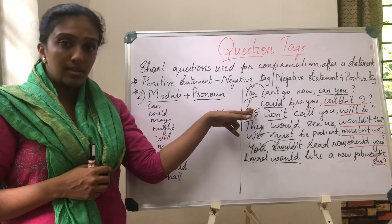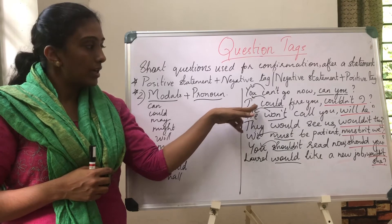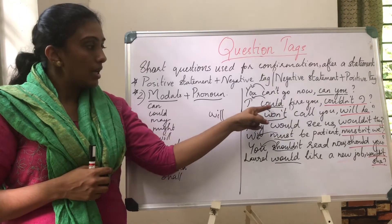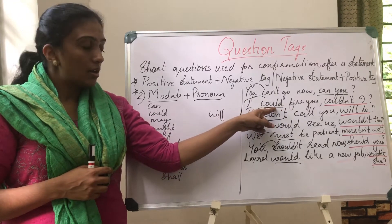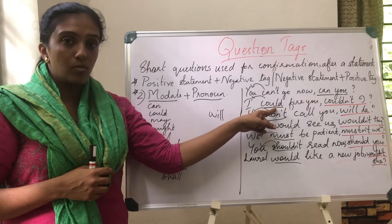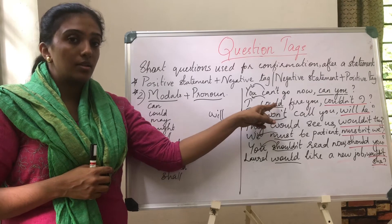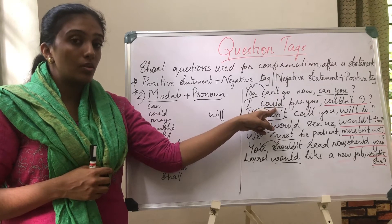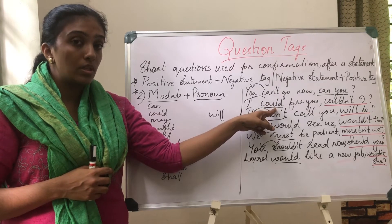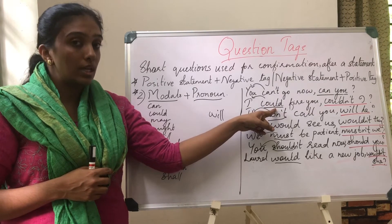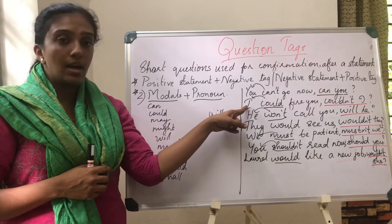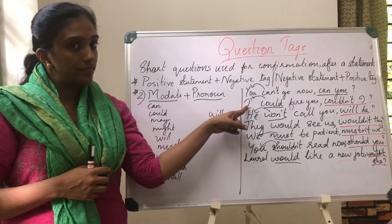Second statement: 'I could fire you.' Could is the modal — it's a positive statement. So, changing it into the negative, the tag becomes: couldn't I.